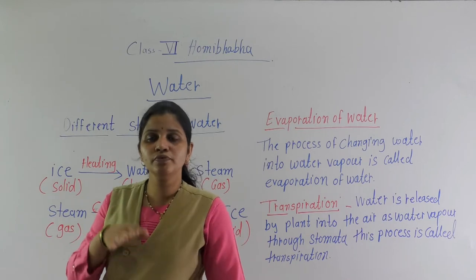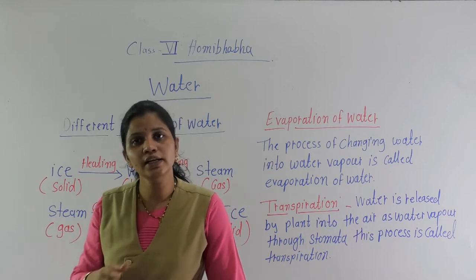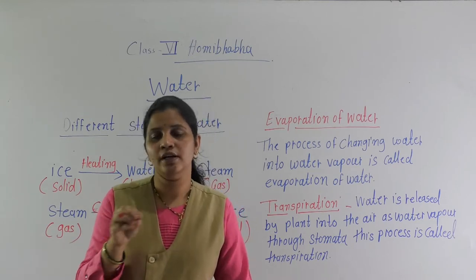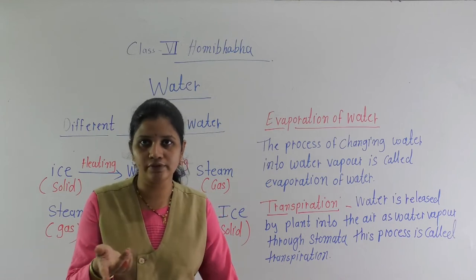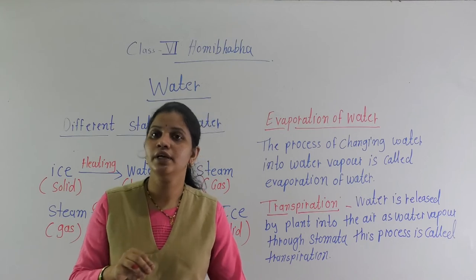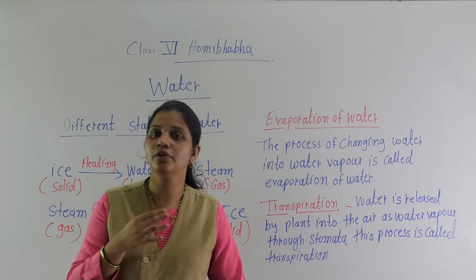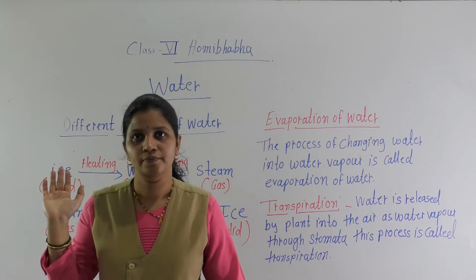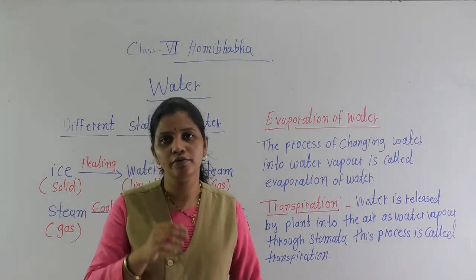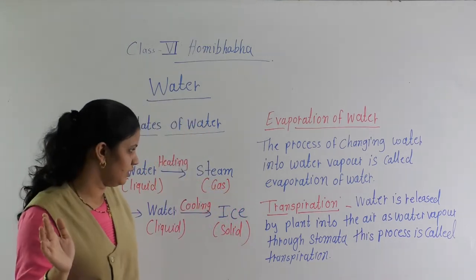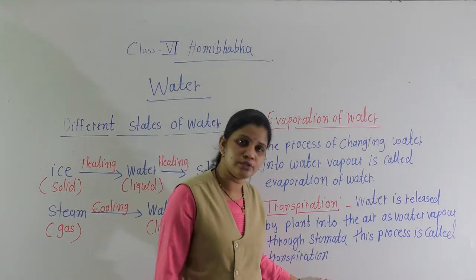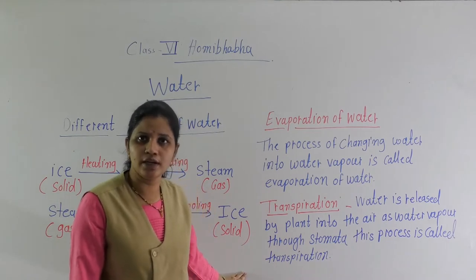The remaining water is released by the leaf through stomata. Stomata are present on the surface of leaves — you know this already. Through stomata, the excess water — the extra water present in that plant — is released. Means it is evaporated like that. This process is known as transpiration.